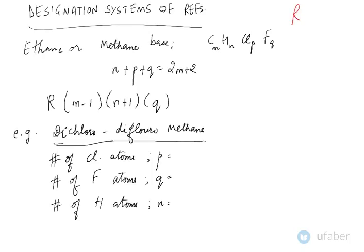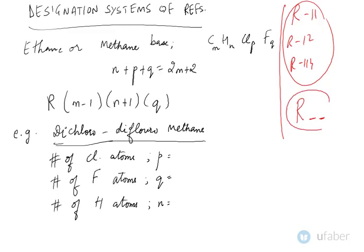For example, R11, R12, R114, etc. If a refrigerant is followed by two digits after the letter R, this means that the refrigerant has been derived from methane base.